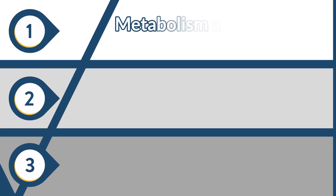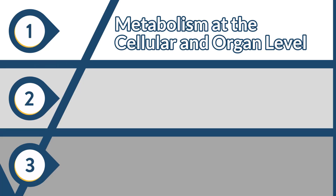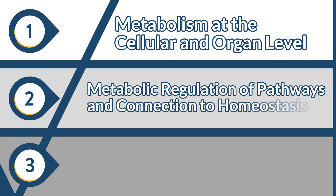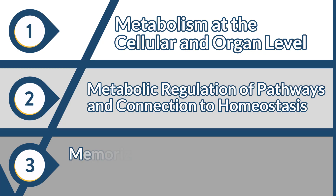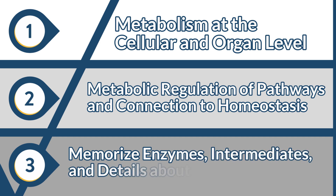Step one, you're going to learn metabolism on a cellular and organ level — where these pathways are happening and what parts of the body they're happening in. Step two, you're going to learn the metabolic regulation for these different pathways and how it connects to homeostasis. And then step three, that's when you're going to memorize all those enzymes and intermediates and little details about metabolism.